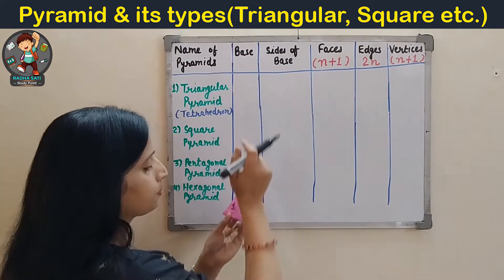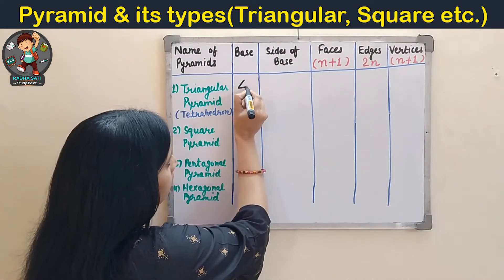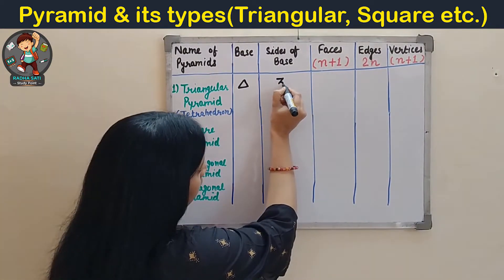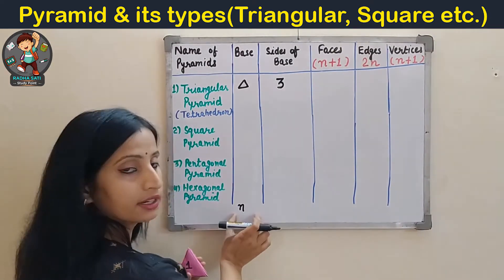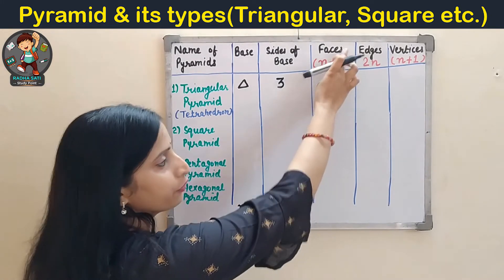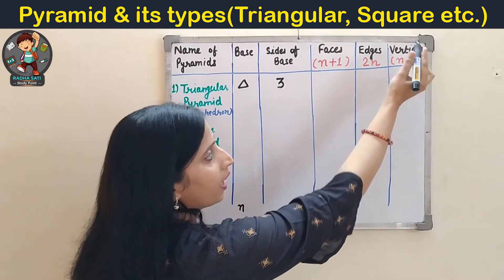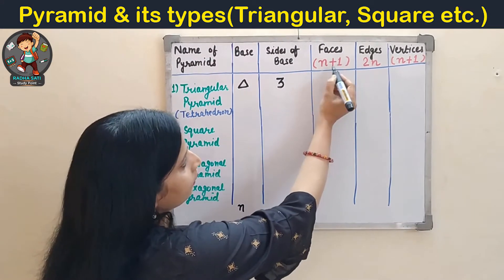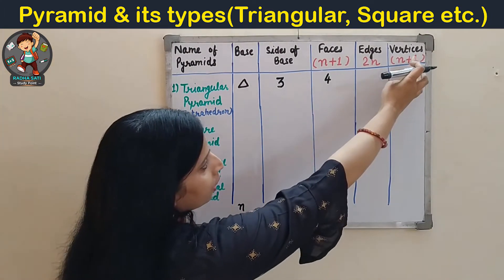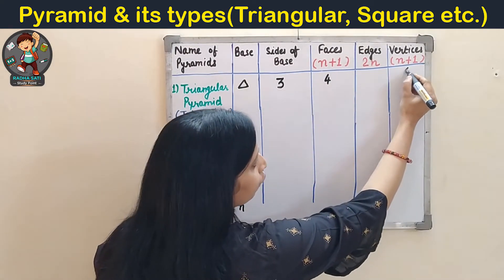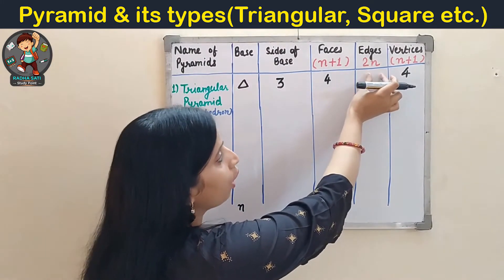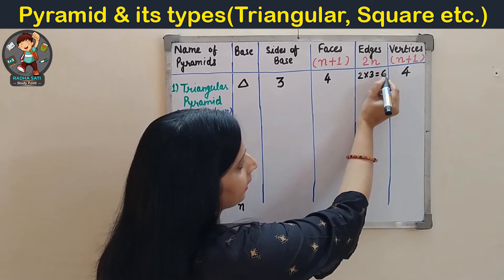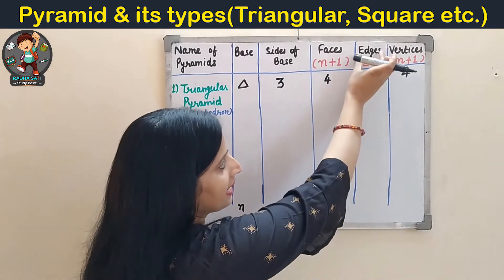The base of this pyramid is triangular, with three sides. A pyramid with an n-sided base will always have n+1 faces, 2n edges, and n+1 vertices. So for a triangular pyramid, faces = 3+1 = 4, vertices = 3+1 = 4, and edges = 2×3 = 6.